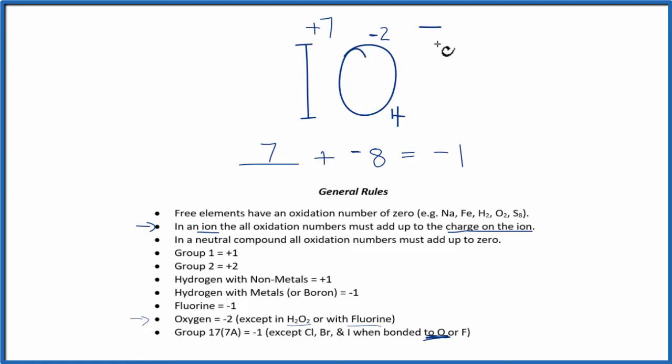So to recap, we found the oxidation numbers for the ones we knew, and then we knew all of these oxidation numbers have to add up to the charge, this minus 1, and we just used that information to find the iodine. This is Dr. B with the oxidation numbers for IO4 minus, the periodate ion. Thanks for watching.